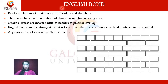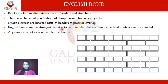English bond: bricks are laid in alternate courses of header and stretcher — the first layer is header and the second is stretcher. There is a chance of penetration of damp through transverse joints. Queen closers are inserted next to the header to produce overlap. English bond is the strongest, but continuous vertical joints are to be avoided — vertical joints should not be in the same line. Appearance is not as good as Flemish bond, which is more aesthetically pleasing.